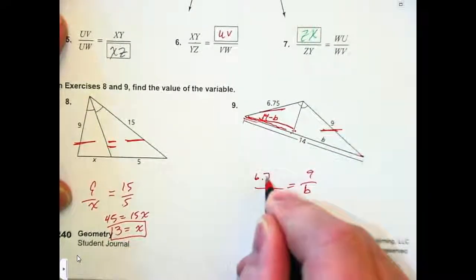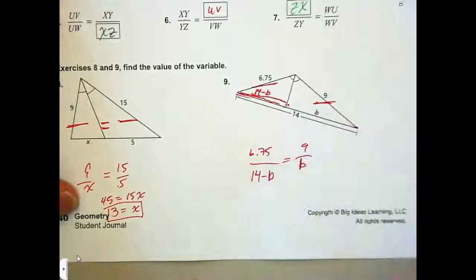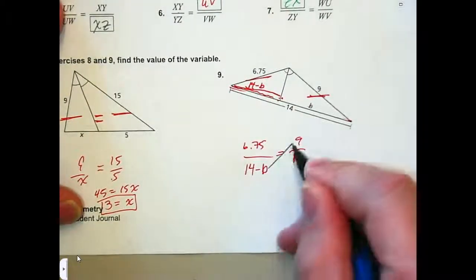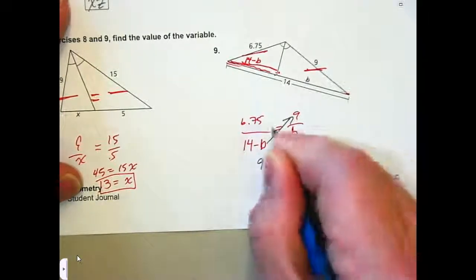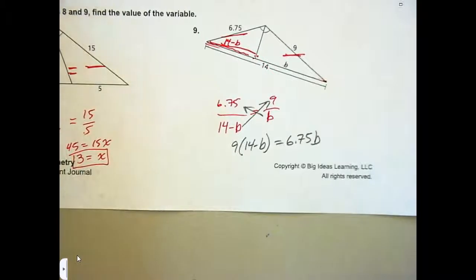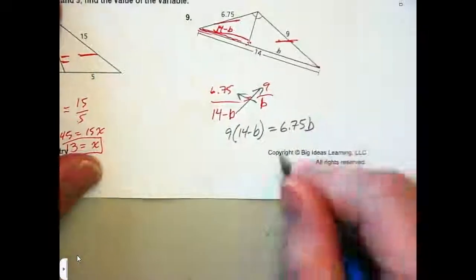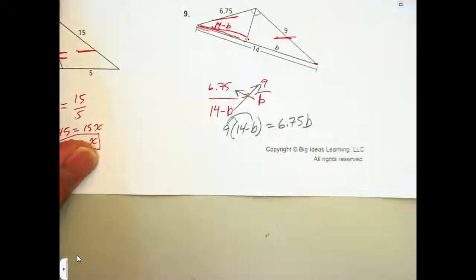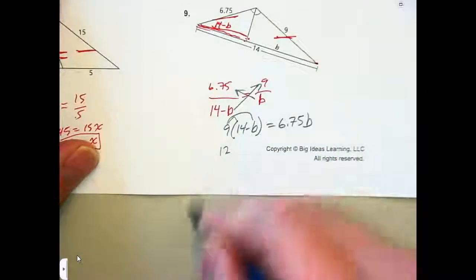We'd have 6.75 is to 14 minus B. Make sure your B's are B's and not 6's, right? Otherwise, that becomes a little confusing. So, when you cross multiply here, you have nine times the quantity, 14 minus B, equals 6.75B. So, this would be a cool problem. It's 14 times 9. Anyone would do that in their head? 126. Yeah, it's 140 minus 14. 126. 9 times B, 9B.